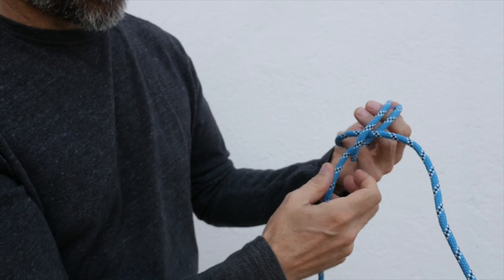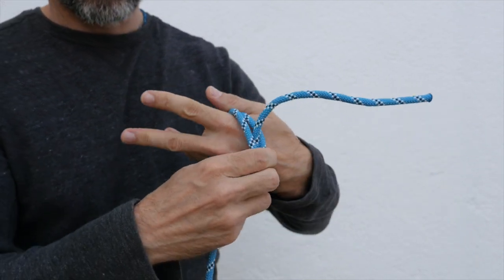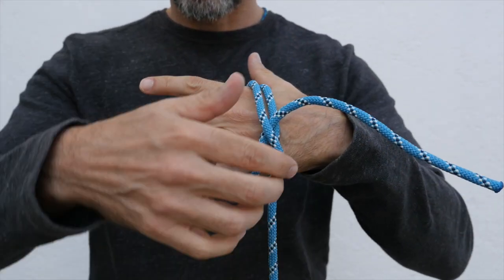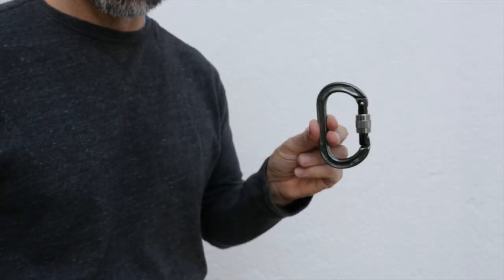But what is a clove hitch over itself? Well, the first thing we should do is tie another clove hitch around another object like this carabiner.